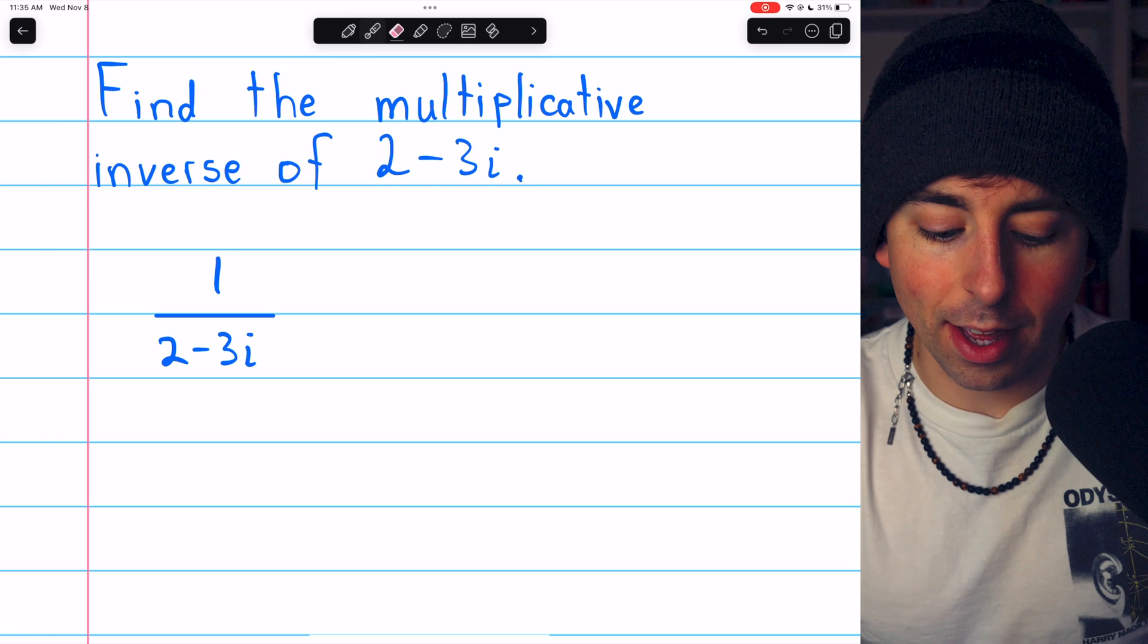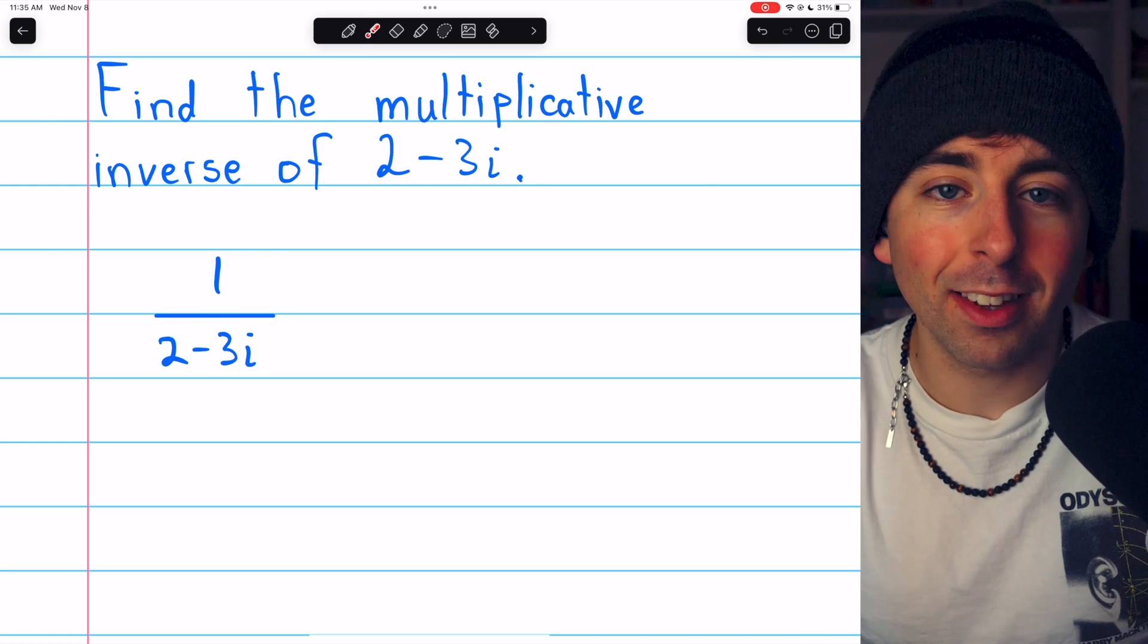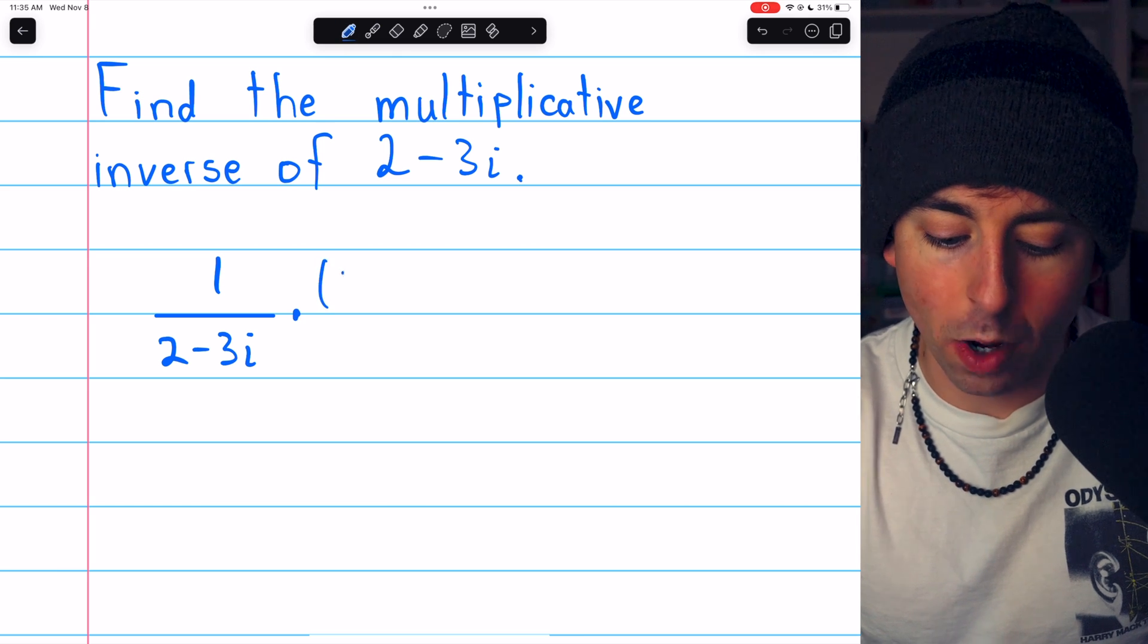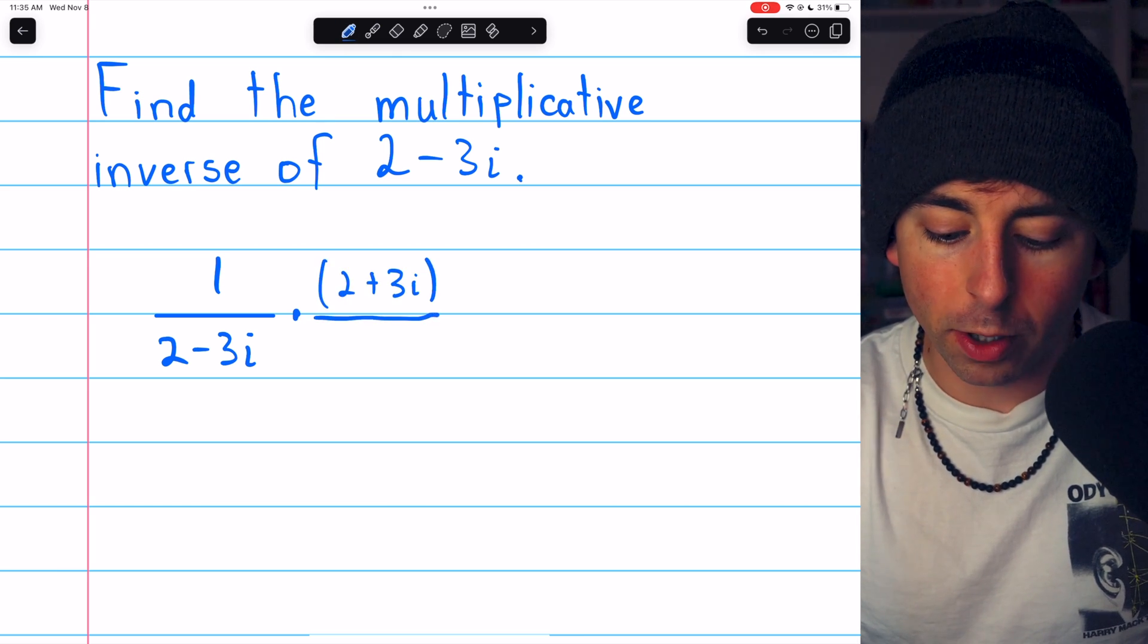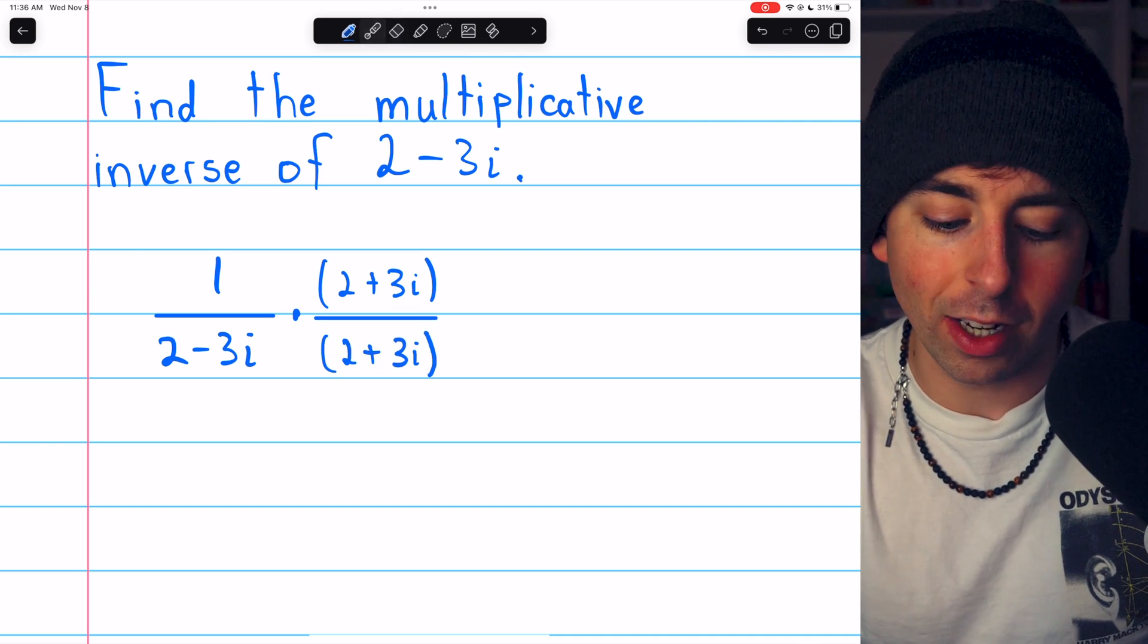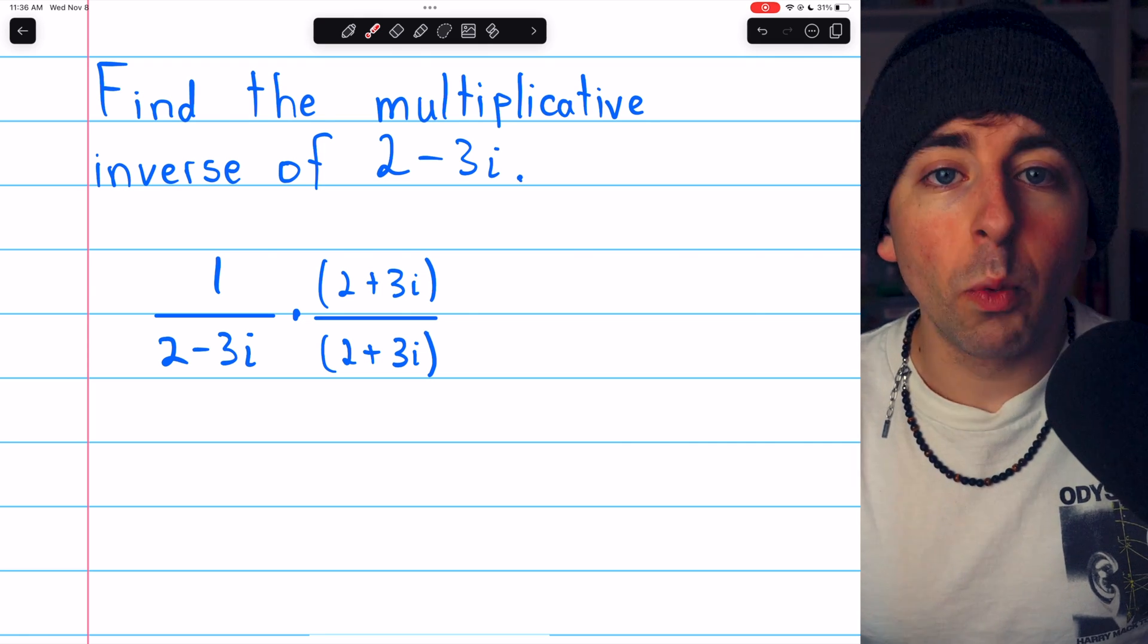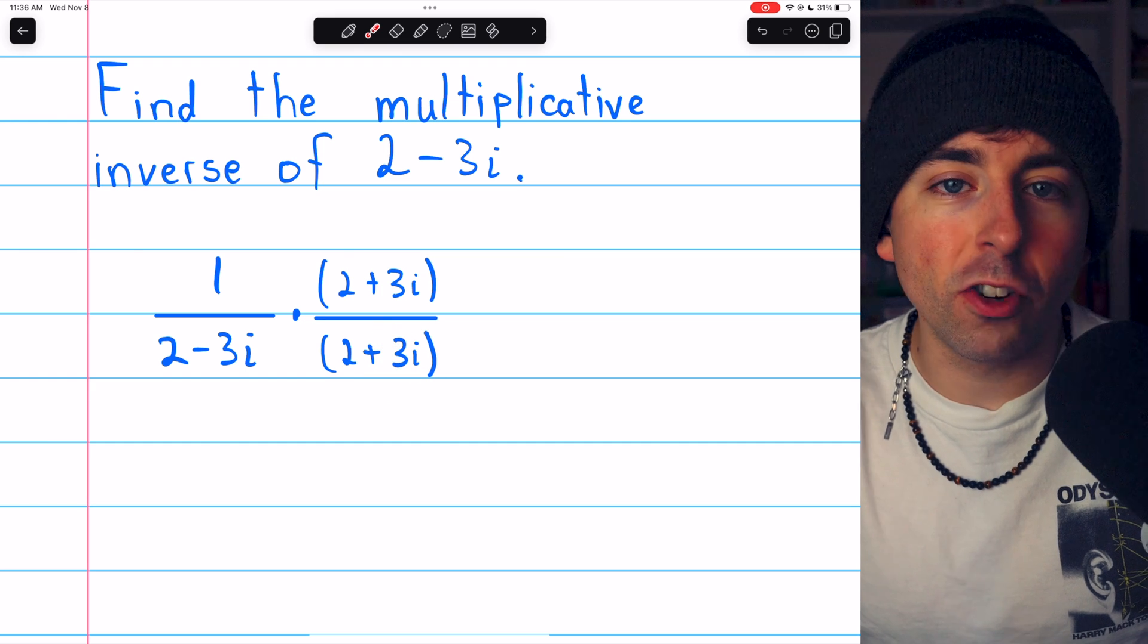So to do that, we're going to multiply this fraction by the conjugate of 2 minus 3i. That means we're going to multiply by 2 plus 3i over 2 plus 3i. So we're really just multiplying by 1. We're not changing the value of the expression, we're just changing how it looks. When we change this minus to a plus, that's what gets us the conjugate.